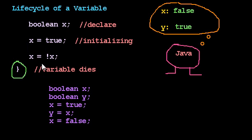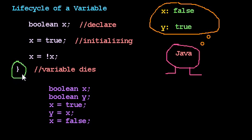We can start using a variable as an expression, so after we store a value, we can retrieve it. And then at some point later, the block where the variable was declared ends with a closing brace. And at that moment, the variable dies. Beyond that brace, we can no longer use that variable.